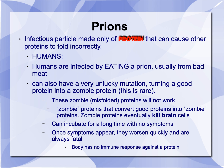What the zombie proteins do is like zombies — one zombie bites one person, they become a zombie, and then they go out and bite other people, and eventually you have a whole bunch of zombies. That's what these proteins do. This misfolded or mutated protein doesn't work properly, and it goes around binding to other good proteins, converting them to zombie proteins. They eventually kill brain cells, and it can incubate for a long time with no symptoms. Once symptoms appear, they worsen quickly — because it's been building and building — and are always fatal. Why? Because your body has no immune response against a protein.